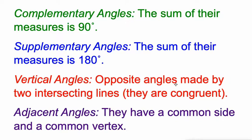Vertical angles are opposite angles made by two intersecting lines. I'll show you those. And we should know too that vertical angles are always congruent to each other. Congruent means they have the exact same measure. So there's another definition. And adjacent angles are two angles that have a common side and a common vertex. We'll talk about what that means as well.